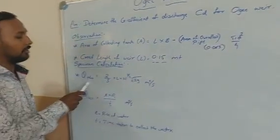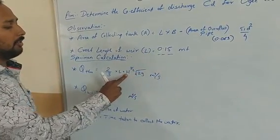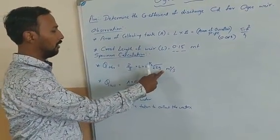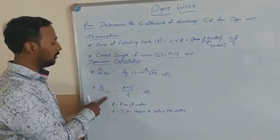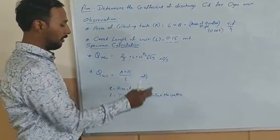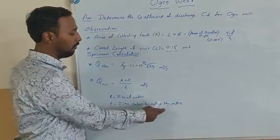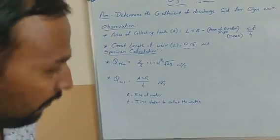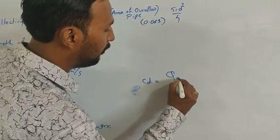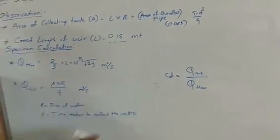Next, for theoretical discharge, the formula is 2/3 into L into H to the power 3/2, where L is 0.15 and H is measured in the experiment as H2 minus H1, multiplied by root of 2g, where g is acceleration due to gravity in meters per second squared. Q actual is equal to A into R divided by T, where A is area, R is rise of water, and T is the time taken to collect R centimeters of water. After getting the theoretical and actual values, we will get the CD value — that is Q actual divided by Q theoretical.